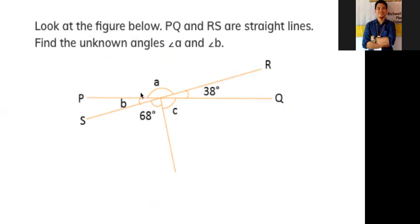First, to find angle a, we know that angle a is an angle on a straight line with angle 38. So we can say that in a straight line we have angle RCQ which is 38 and this angle a here.